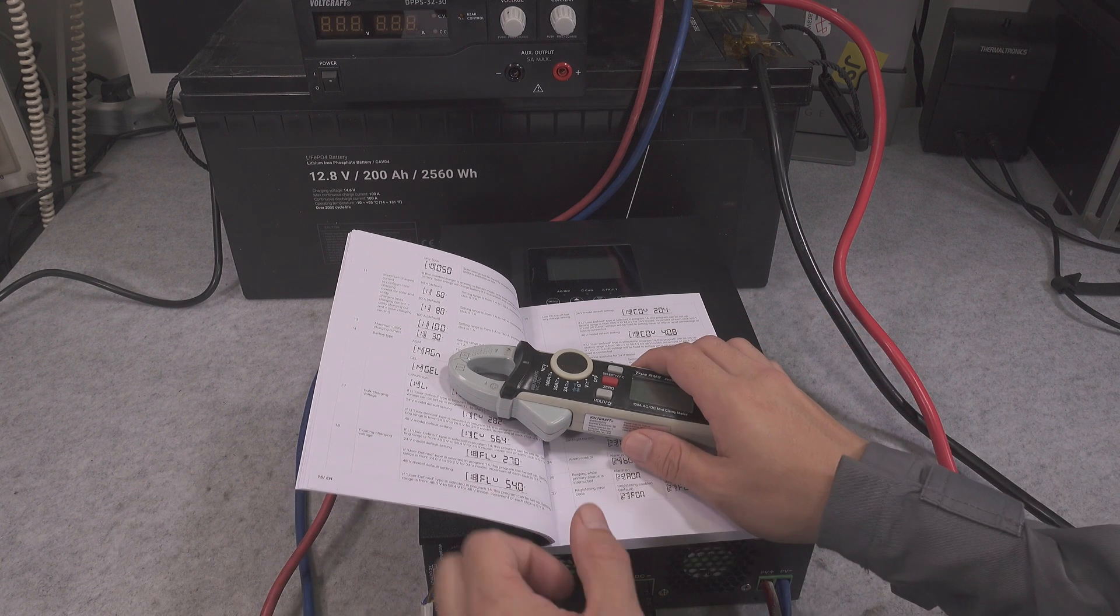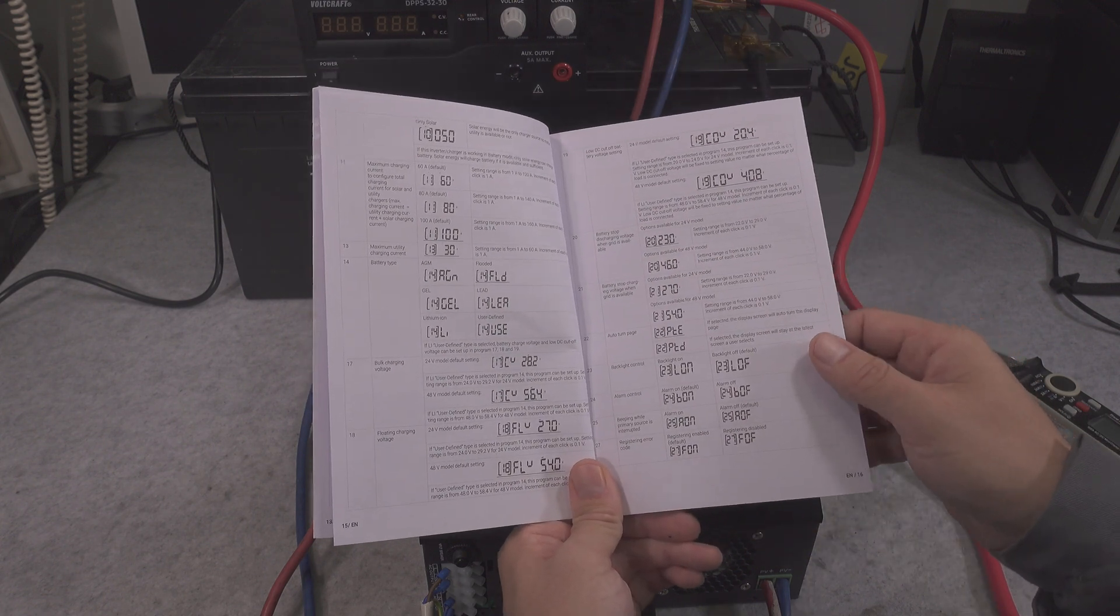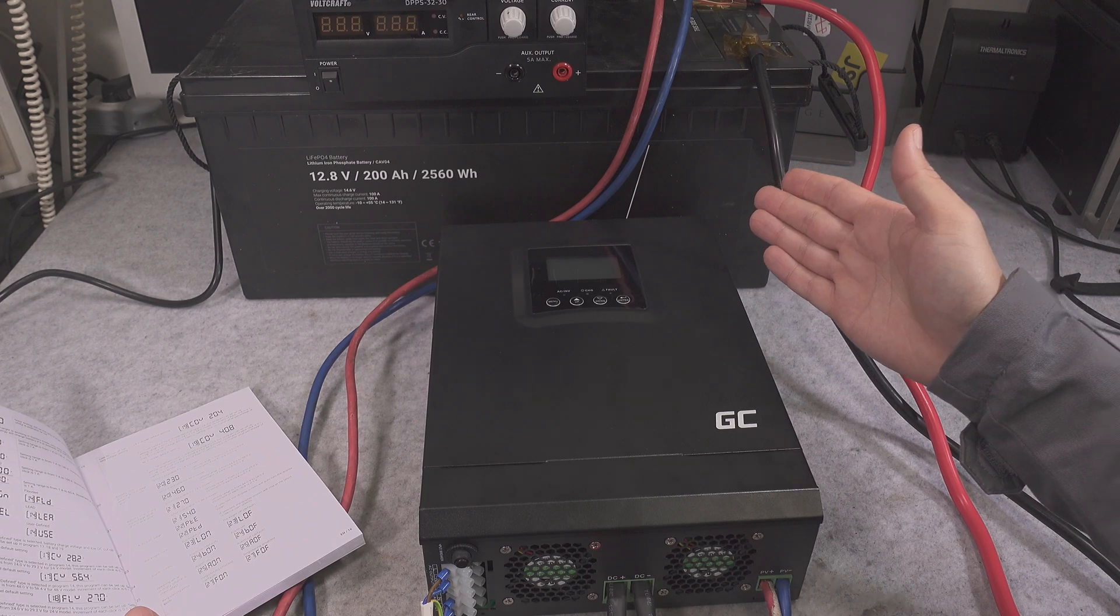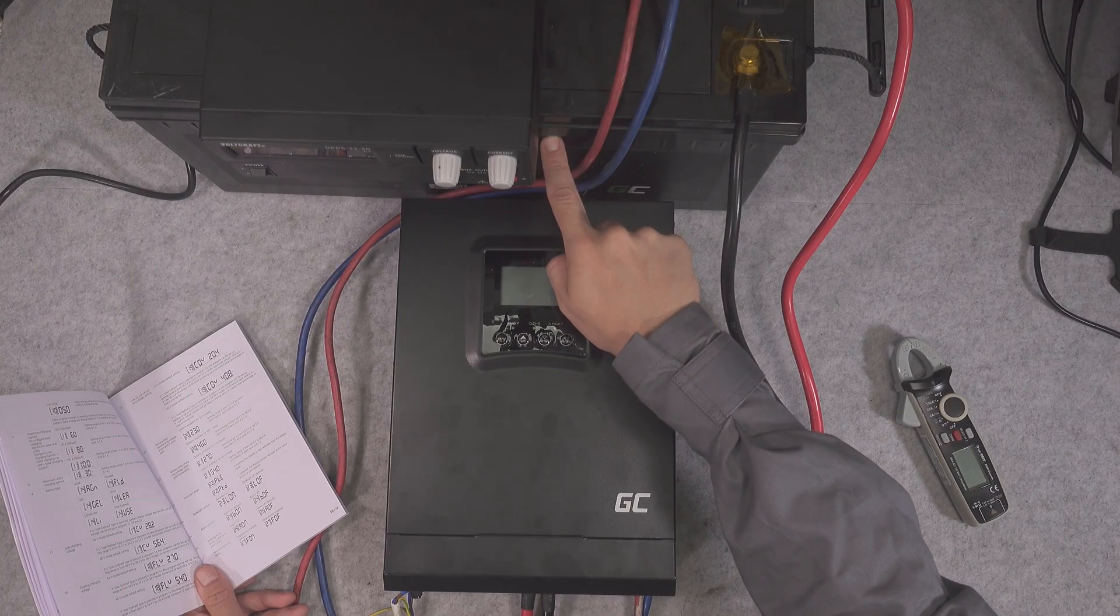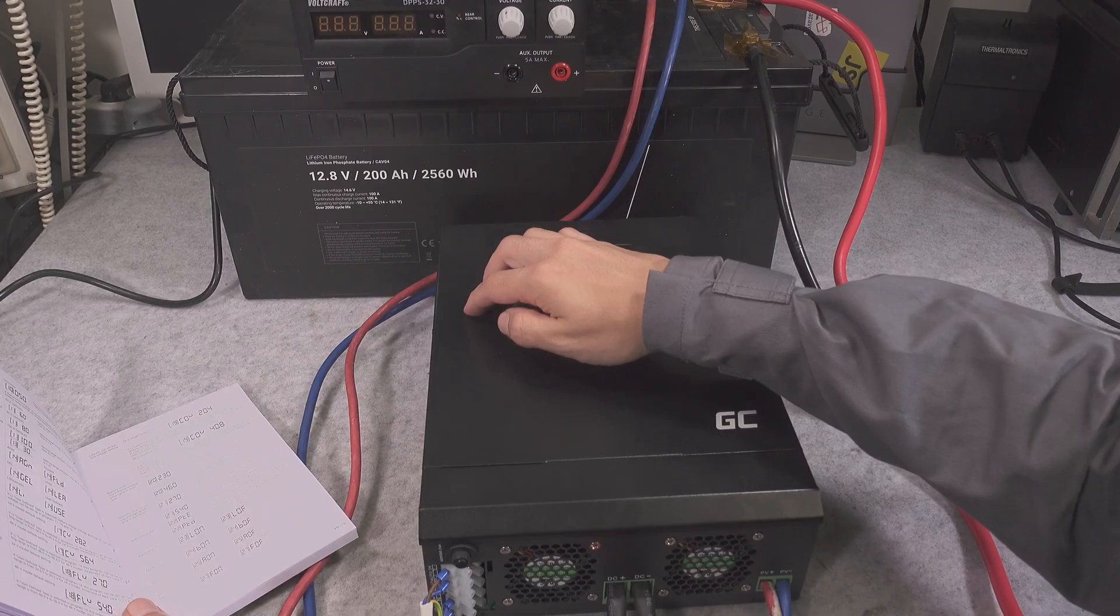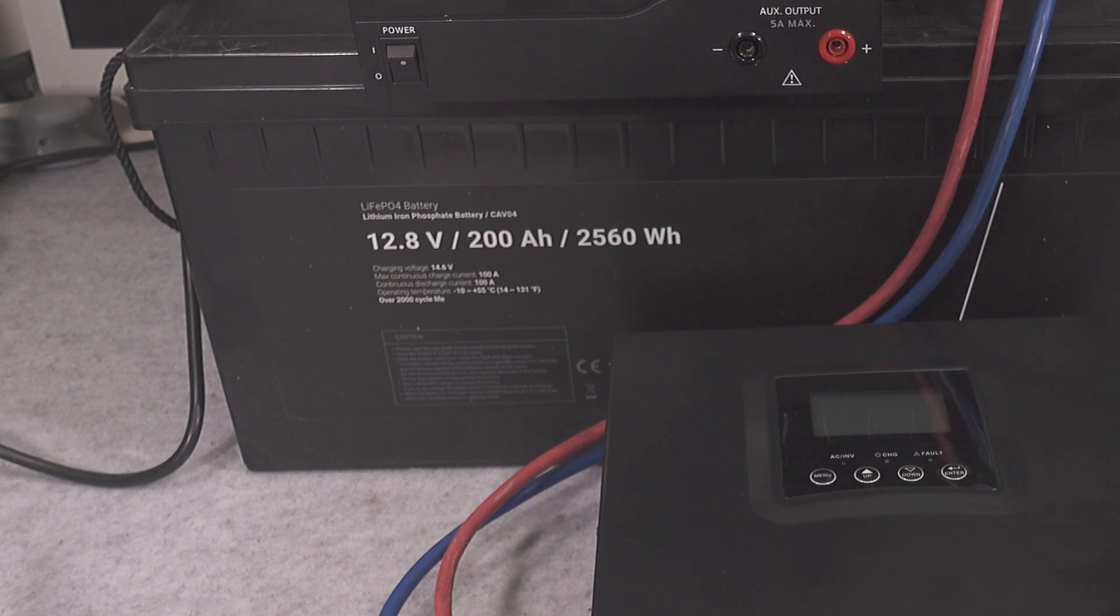I'm configuring it for lithium iron phosphate battery, 200 amp hour, which translates to over two and a half kilowatt hour, so we've got a pretty decent amount of capacity.